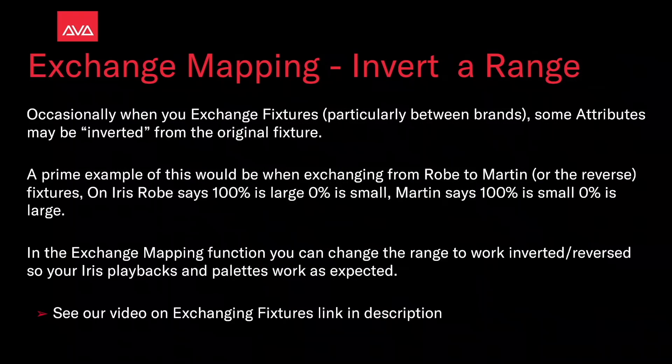Occasionally when you exchange fixtures, particularly between brands, some attributes may be inverted from the original fixture. A prime example of this would be when exchanging from Roby to Martin or the reverse fixtures. On iris, Roby says 100% is a large iris and 0% is a small iris, while Martin says 100% is small and 0% is large.